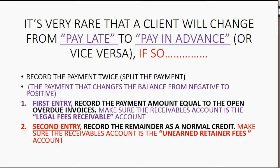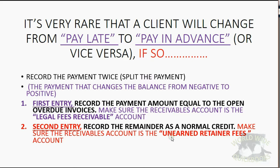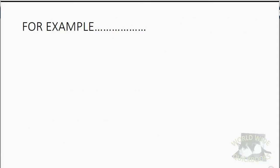Then record that exact same payment again with the exact same information, but record the money amount as the remainder of the payment. In the first entry, you have to make sure that the accounts receivable account you choose is the legal fees receivable account, because if the invoice is not yet paid, it means the invoice was recorded into legal fees receivable, and therefore that's where you have to put the payment. In the second entry, there was no invoice that you're paying, so the entire amount of the excess is unearned. Do the exact same thing you did in the first entry, except the money amount is the remainder and the accounts receivable account you choose is unearned retainer fees.